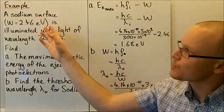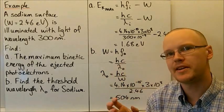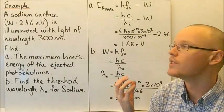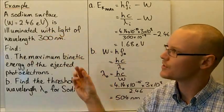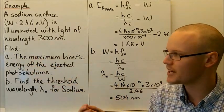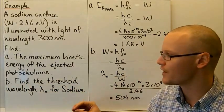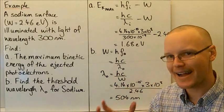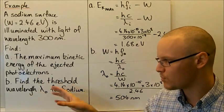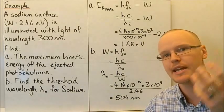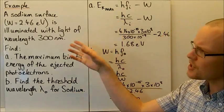For an example: a sodium surface has a work function of 2.46 electron volts — the minimum energy needed to liberate an electron from sodium. It's illuminated with light of wavelength 300 nanometres. We need to find the maximum kinetic energy of the ejected photoelectrons and the threshold wavelength for sodium. The threshold wavelength is the maximum wavelength that will allow for the release of electrons.